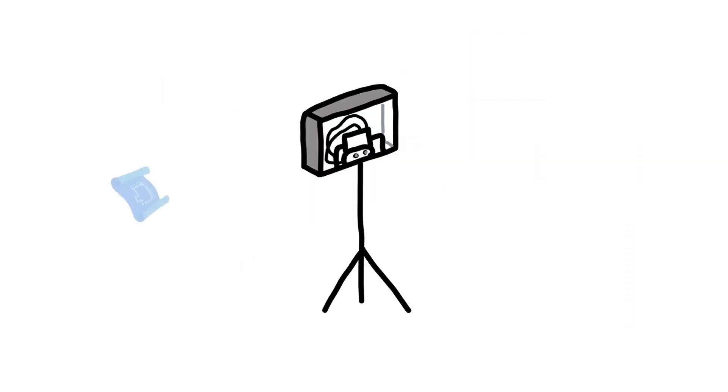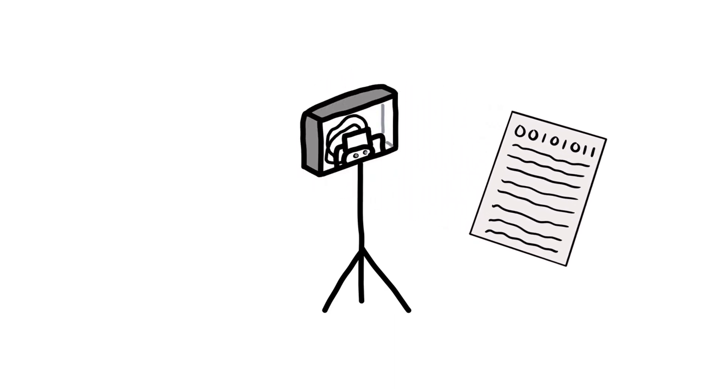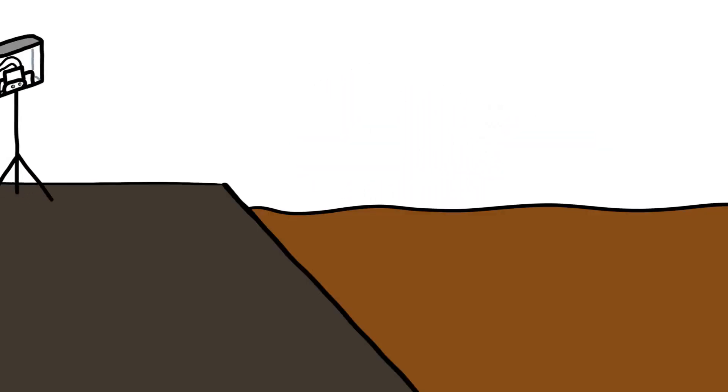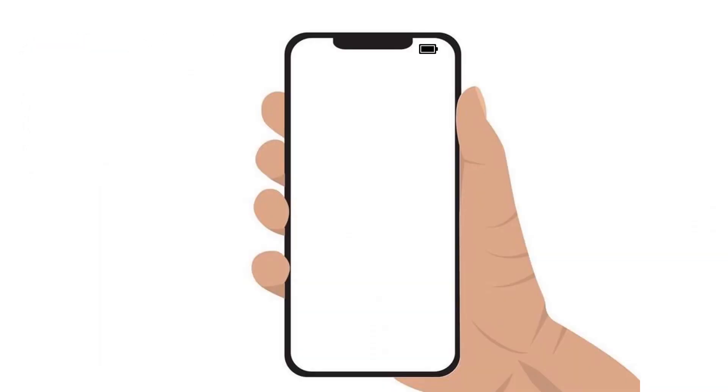Users can operate this device by first obtaining the dimensions of their manure storage from engineering schematics, which allows the device to calculate the volume of manure from depth. They can then install the device at the edge of their storage, specifying how often and for how long they want volume measurements.